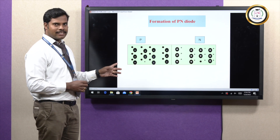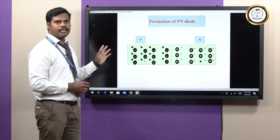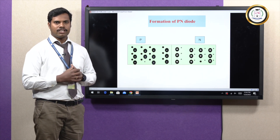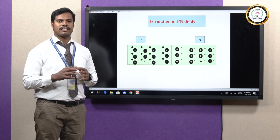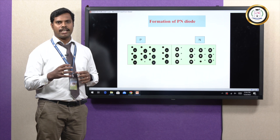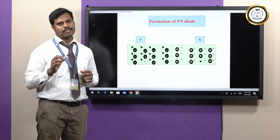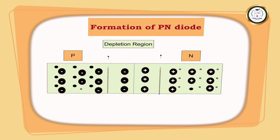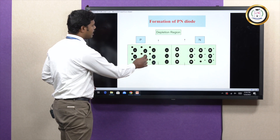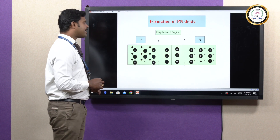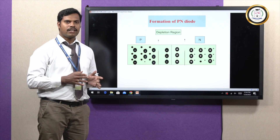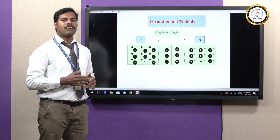Near the junction, the excess holes in the P-type material and excess electrons in the N-type material start to move across the junction. Electrons and holes are attracted towards each other; while attracting, they form a covalent bond and become immobilized. Due to this, a depletion region is formed between the P-type and N-type material junction, also called the space charge region or transition region.